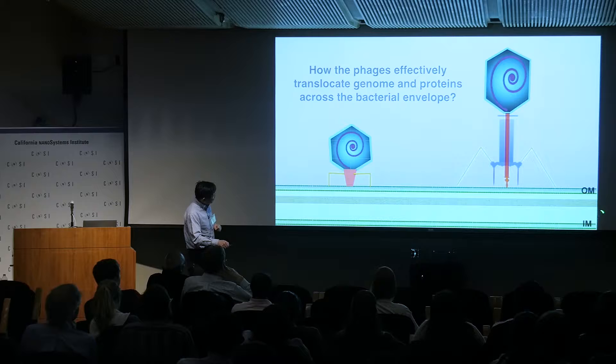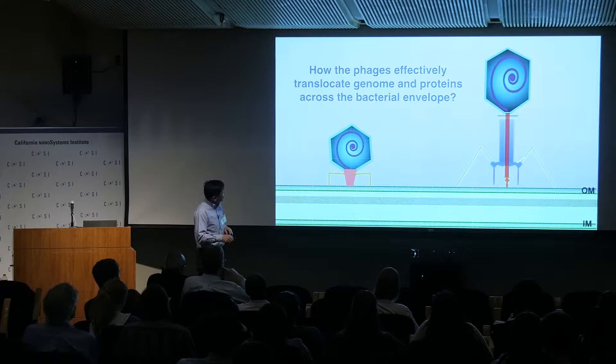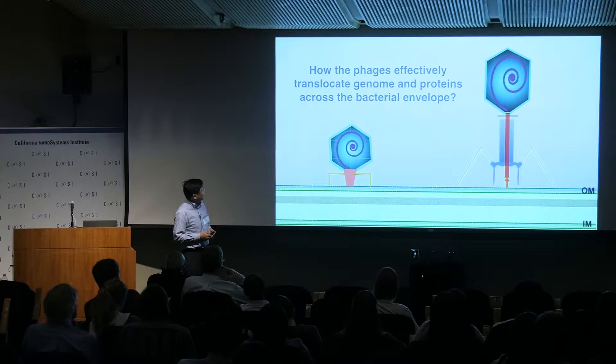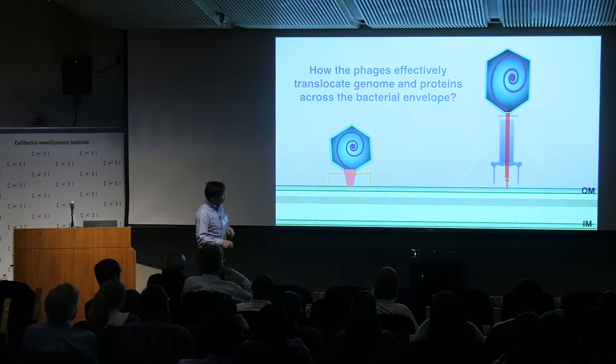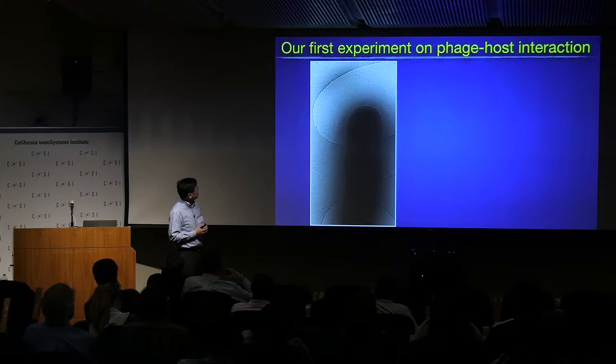When I started my lab, we had this simple question: how is the phage able to effectively translocate protein across the gram-negative bacterial envelope — which has an outer membrane, cell wall, and inner membrane? This applies to T4-like contractile tail phage, short tail phage like P22 and T7. We'll show you today that using cryo-tomography, we're able to see this transient envelope channel formed by very different phage.